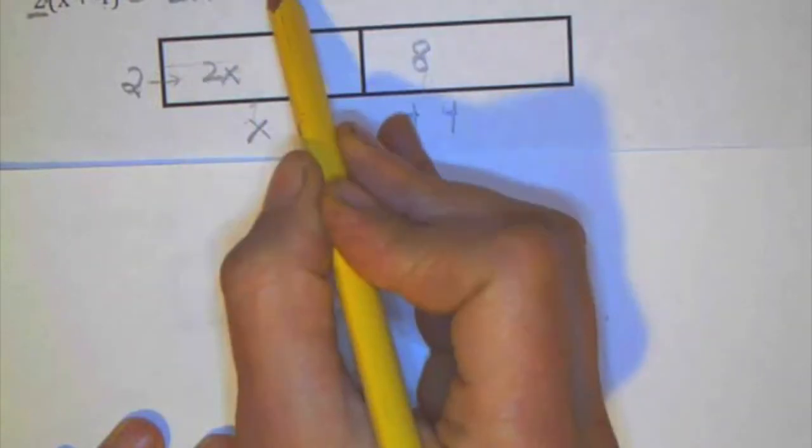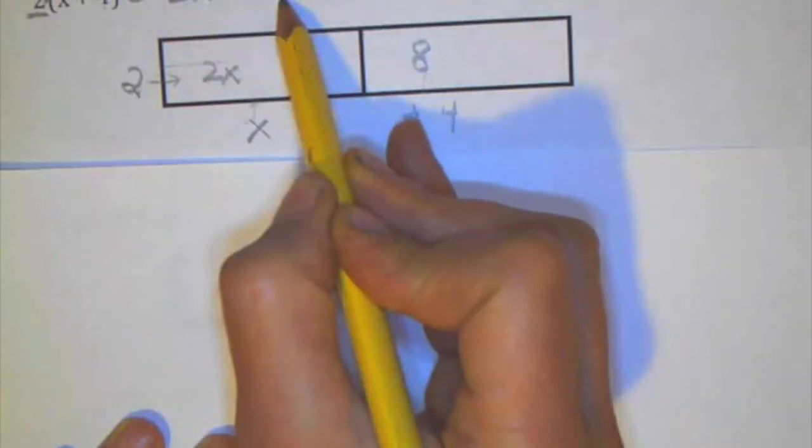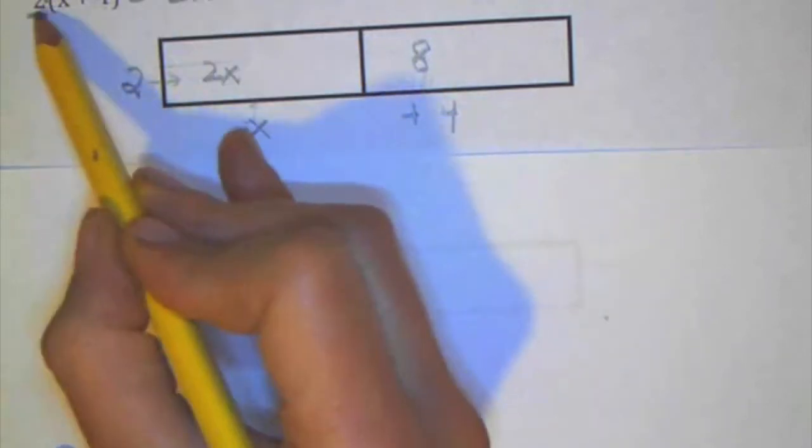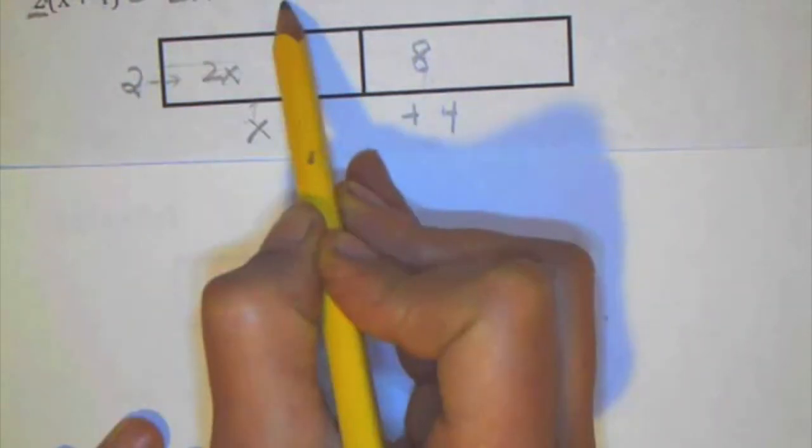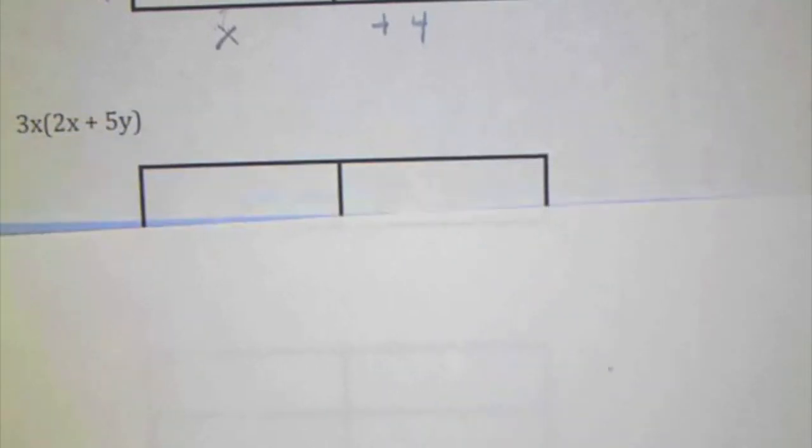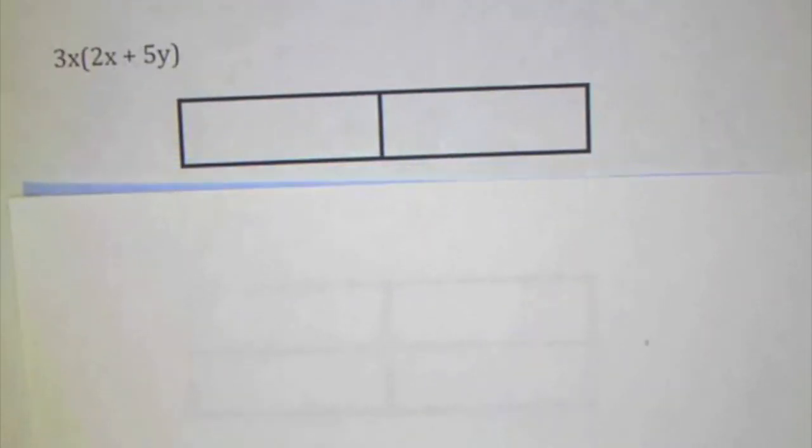And I also check to see if there's any combining of like terms. Those are different. So that's my final answer. And you can see 2x, 2 times x, 2 times 4 is 8. Not that complicated for that type, obviously it is if you're starting. But once again this is a strategy that will help you regardless of the complexity of the problem.